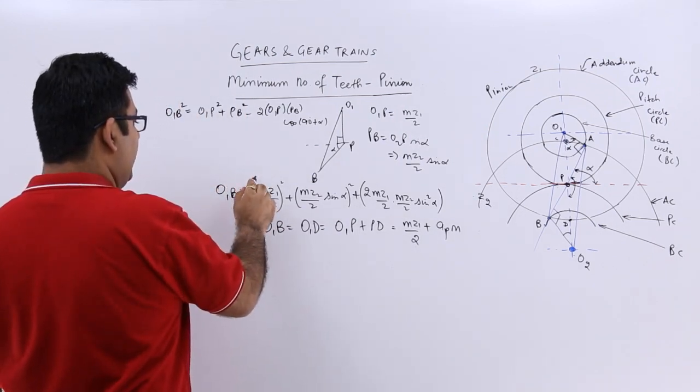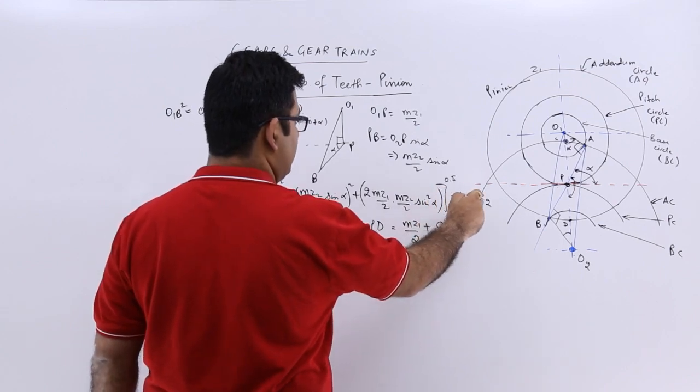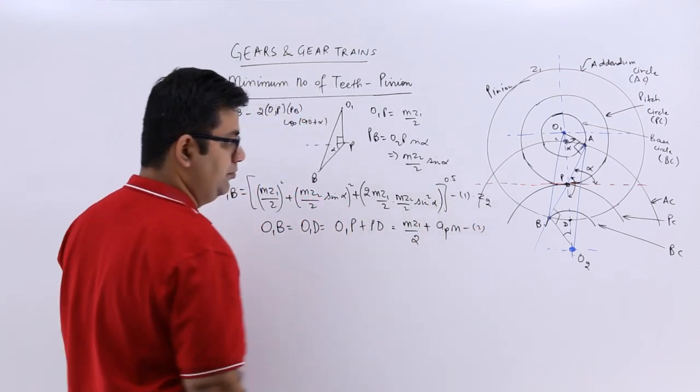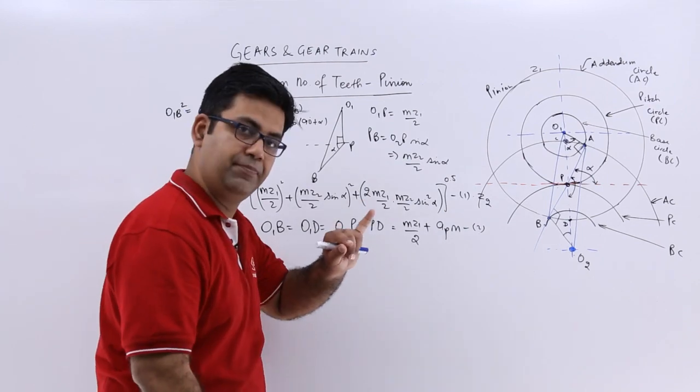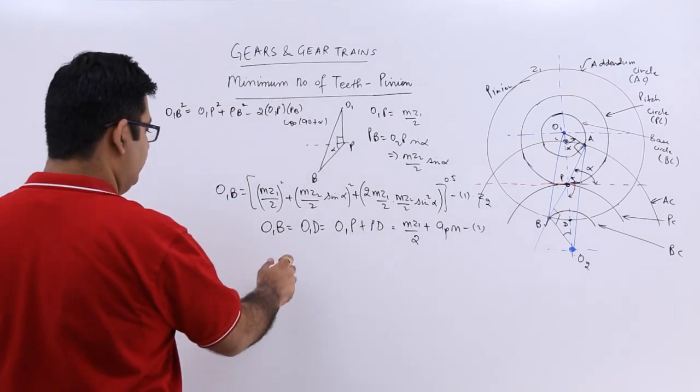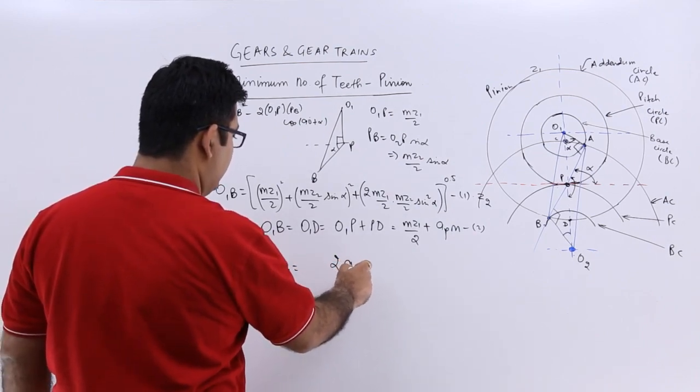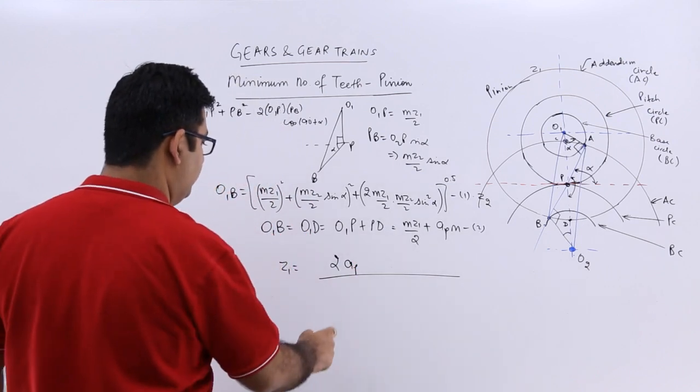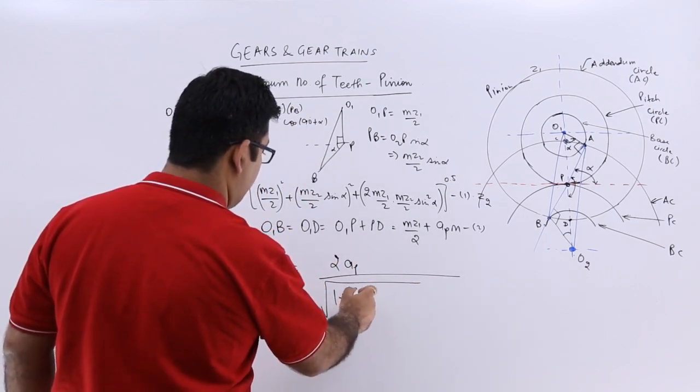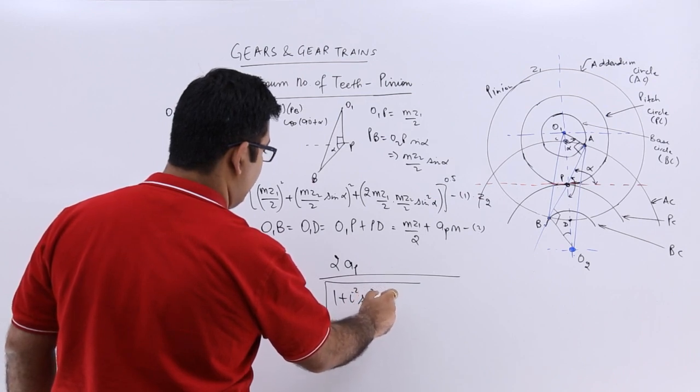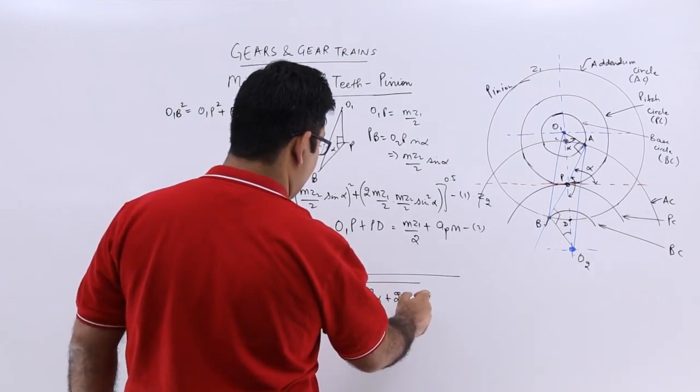That is equation 1, and this is equation 2. Equate these two to get the value for z₁. z₁ = 2·aₚ/√(1 + i²·sin²α + 2i·sin²α) - 1. So that is the minimum number of teeth on a pinion.